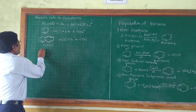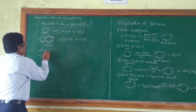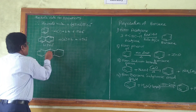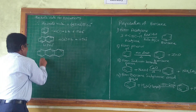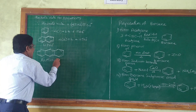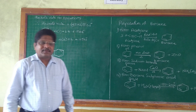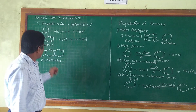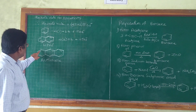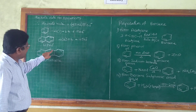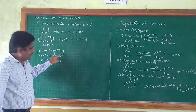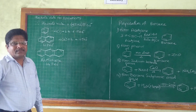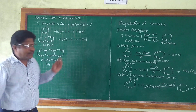Let us consider the third example — a tricyclic compound. The name of this compound is anthracene, which is a tricyclic compound included in polycyclic aromatic compounds. If we count the number of pi electrons in anthracene: 2 + 2 + 2 + 2 + 2 + 2 + 2 = 14 pi electrons total.